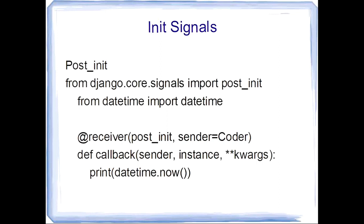Moving on to post-init signal. This signal is used when a particular model class needs to be aware that an object is created, or a new object is created. In that case, we need to first import the signal and call the post_init method. Similarly to what we did in pre-init.